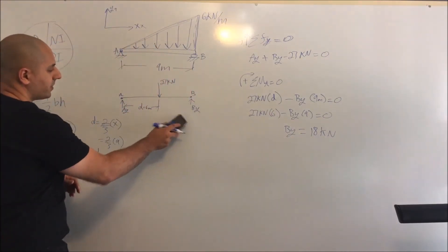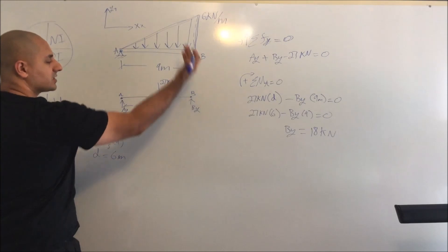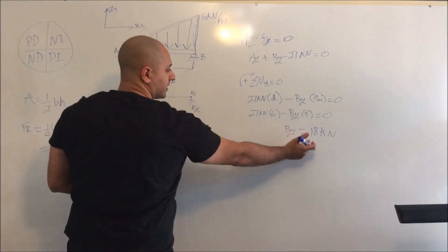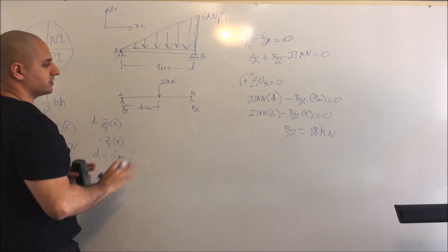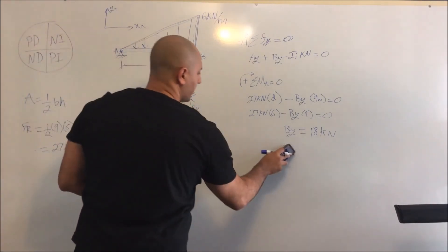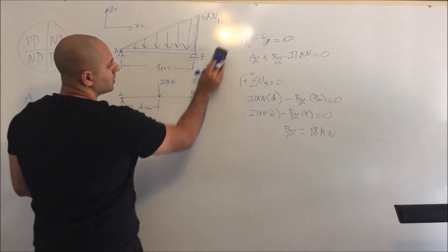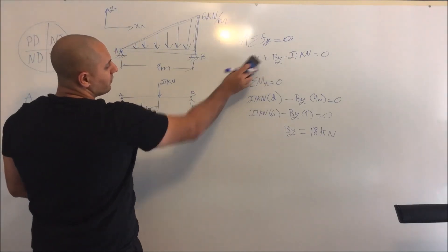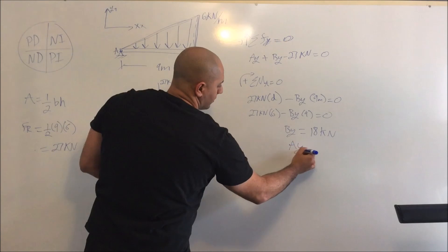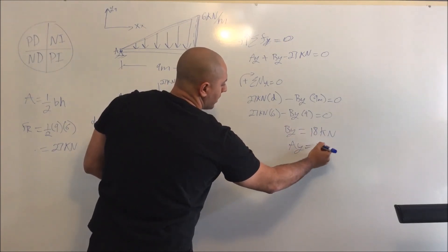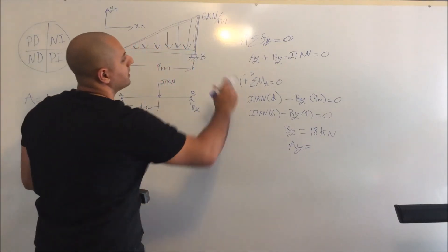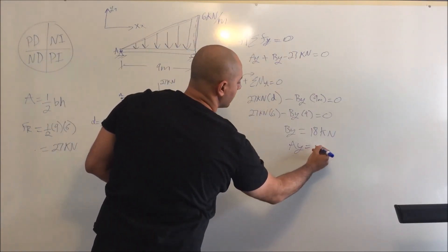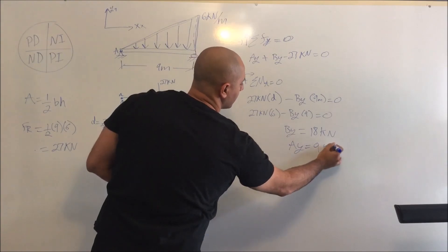Now that we have B_Y, we can go back into the first equation and solve for A_Y. Once you do that, A_Y will be 9 kilonewtons.